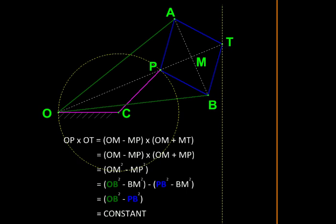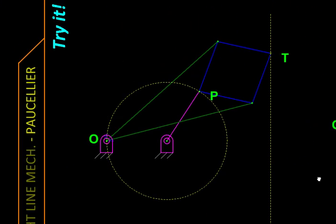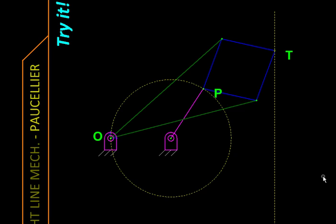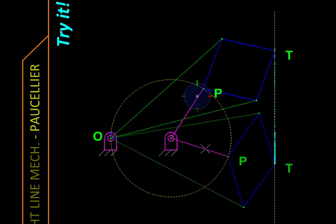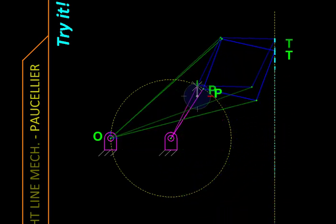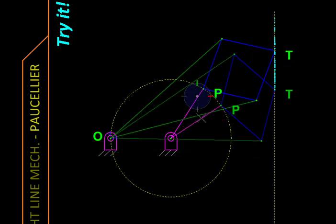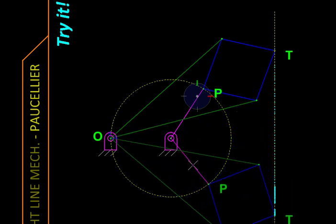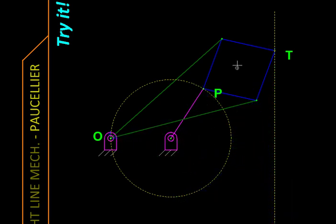Let us see this in its physical form. So this is the mechanism that we have derived from the geometry that we just saw, and we are going to drag on this point P which will be moving on a circle. You can notice its image T is tracing the exact straight line. Of course, we will be getting only a segment because this is a mechanism made up of links of finite lengths.